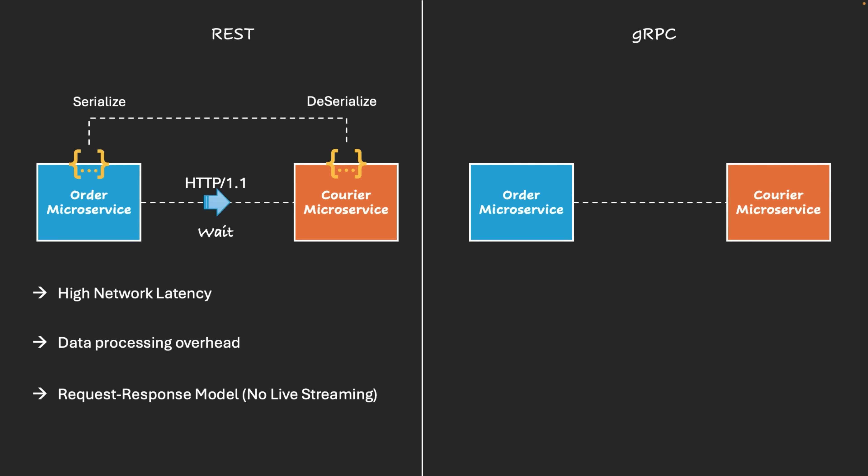Now let's explore how gRPC solves these problems at a high level. For the first problem — high network latency — gRPC uses HTTP/2 for multiplexing. Unlike REST, which opens a new connection for every request, gRPC uses a single connection that handles multiple parallel requests at the same time. As a result, you get faster responses since there is no repeated opening and closing of connections. That is what reduces the network latency in gRPC.